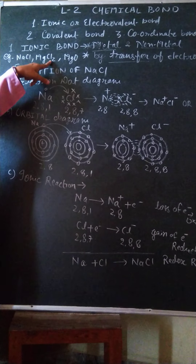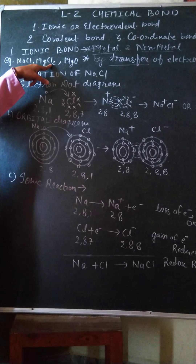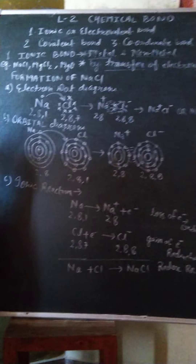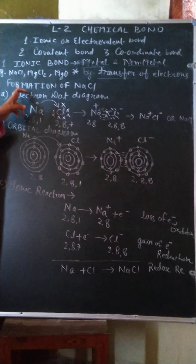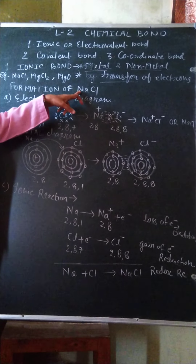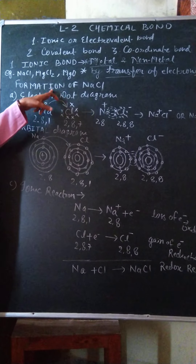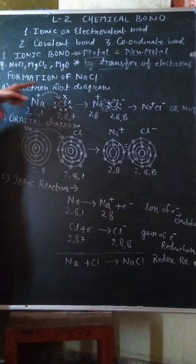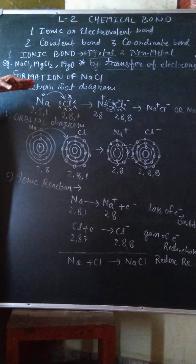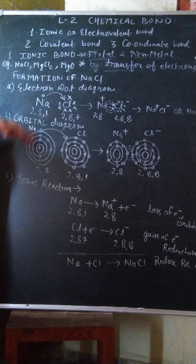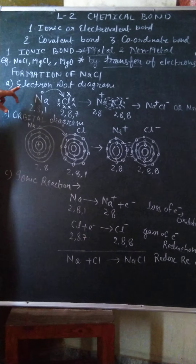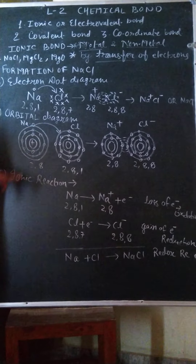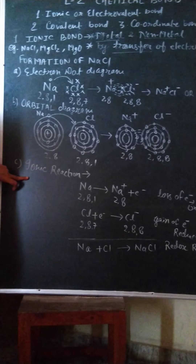In magnesium chloride, magnesium is metal and chlorine is non-metal. Now we have to see their formation — how these compounds are formed. First, we will see the example of sodium chloride, formation of NaCl. We have to study the formation of NaCl under three headings: electron dot diagram, orbital diagram, and ionic reaction.